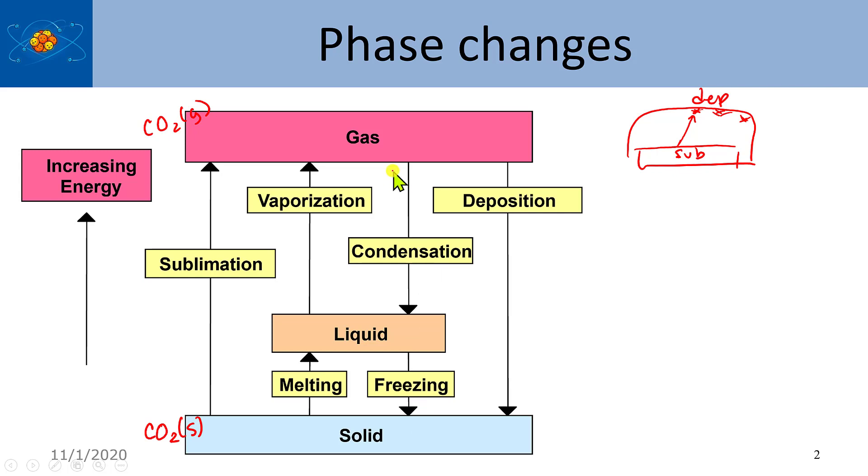Now, one of the things about liquid to gas transformation is we often refer to something called the boiling point. We'll define this more clearly later. But the boiling point is the temperature where the vapor pressure, the vapor pressure of the liquid, and we've talked about this before in the gas laws chapter, where the vapor pressure of the liquid is one atmosphere.